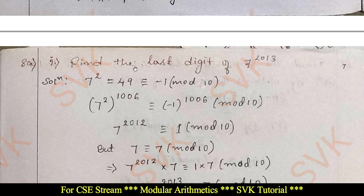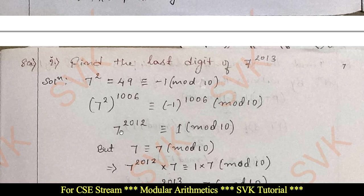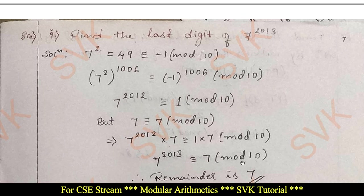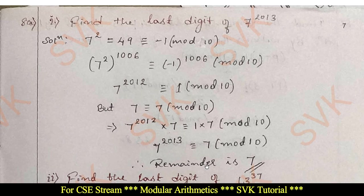Moving on to question number 8a, first part: find the last digit of 7^2013. Consider 7² = 49 ≡ −1 (mod 10). Raising both sides to the power 1006: (7²)^1006 ≡ (−1)^1006 (mod 10). Since the exponent is even, we get 7^2012 ≡ 1 (mod 10). Since 7 ≡ 7 (mod 10), multiplying both sides by 7, we get 7^2013 ≡ 7 (mod 10). Therefore the last digit (remainder) is 7.